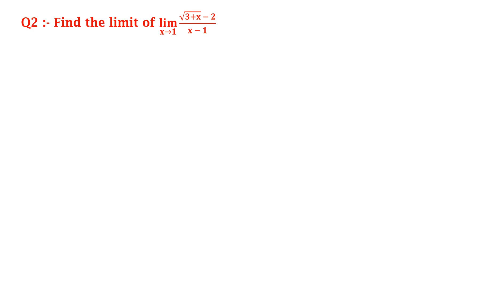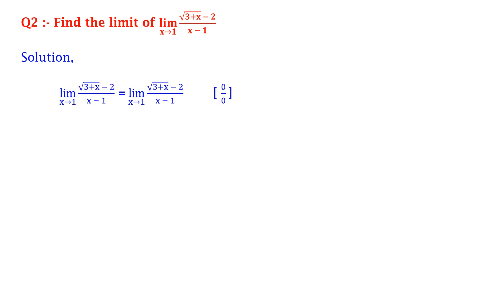Second, find the limit: limit x tends to 1 of (√(3+x) - 2) upon (x - 1). Solution: limit x tends to 1 of (√(3+x) - 2)/(x-1) is again 0 upon 0 form.